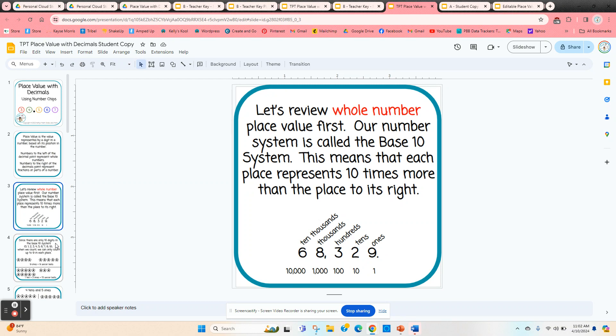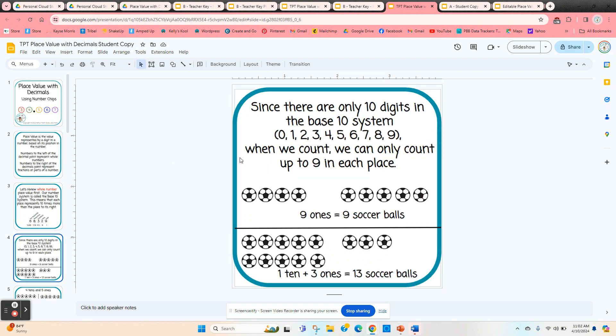So we're going to start with that. It explains that our base 10 system only goes up to the number 9, so we can only count up to 9 in each place.